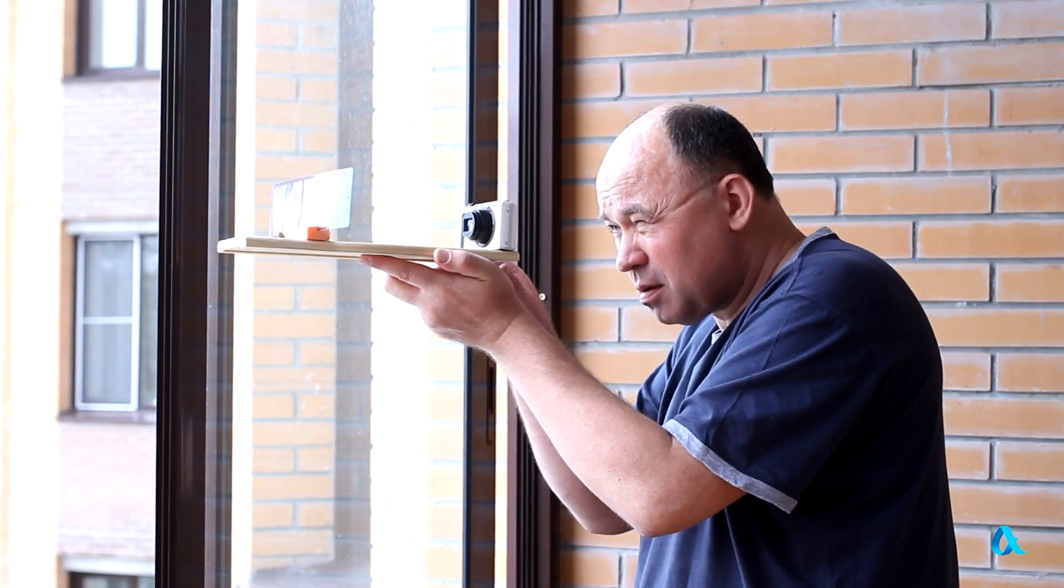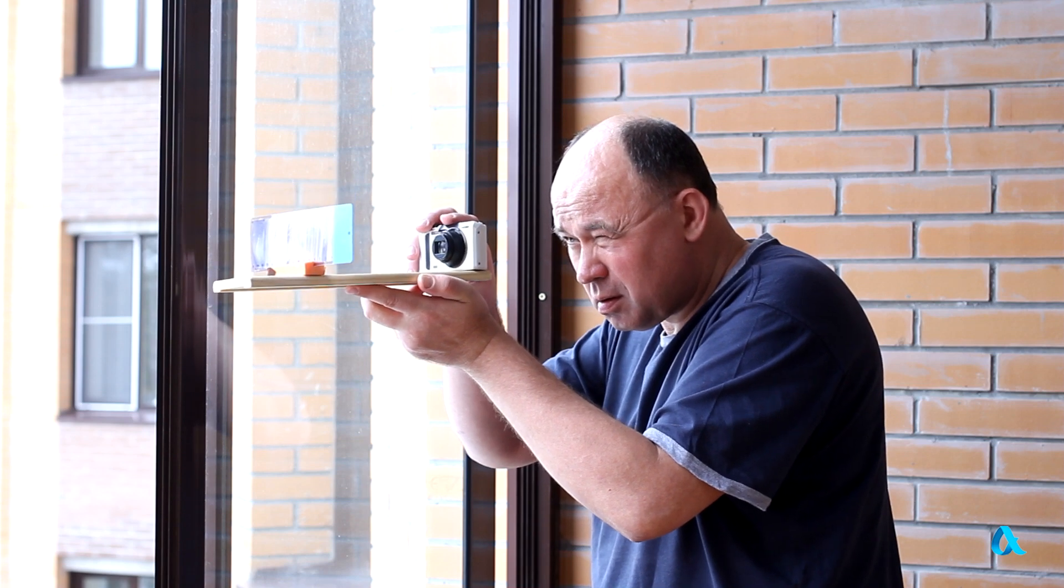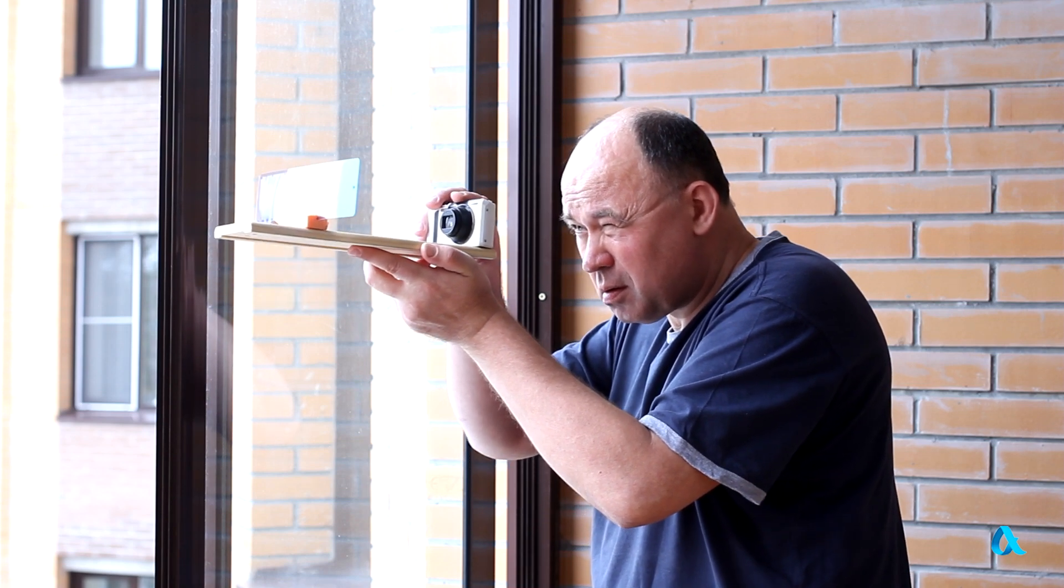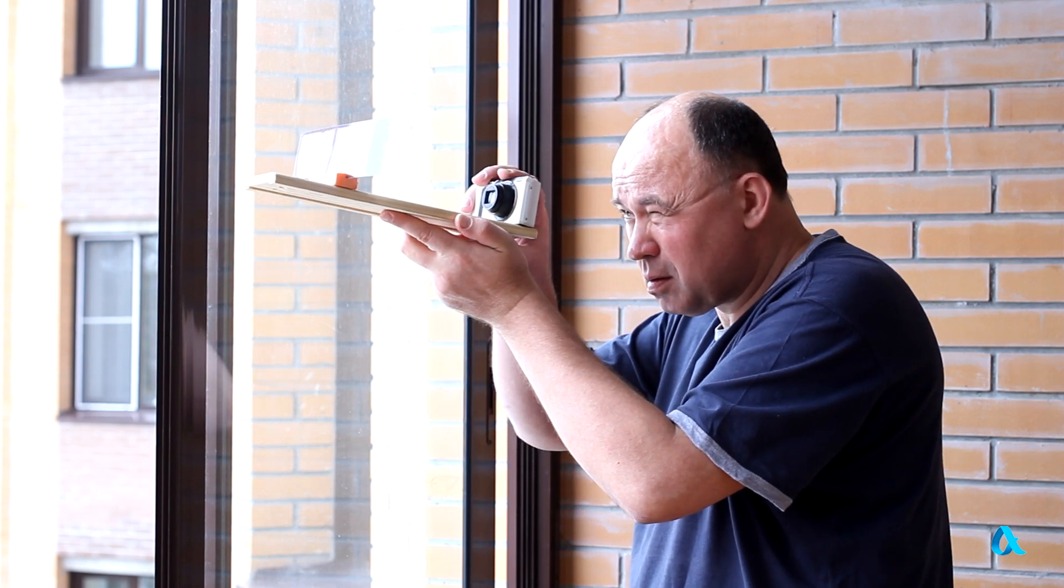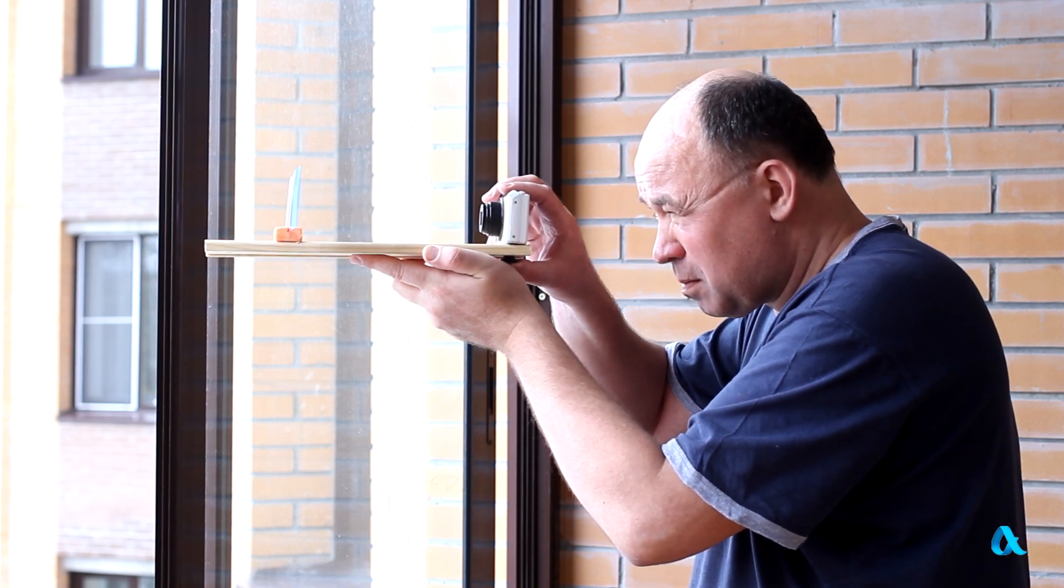We are going to try and use a Fresnel lens as an astronomical one. We will view the image that the lens creates on the focal plane through a camera working in macro-photography mode and not with a naked eye. Our telescope is functioning, but with great distortion, so a Fresnel lens isn't suitable for a telescope.